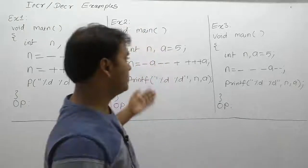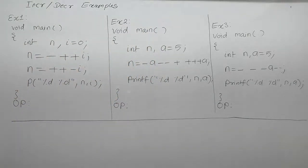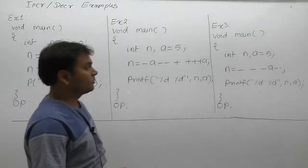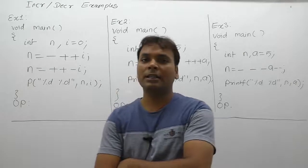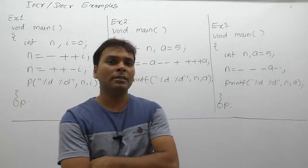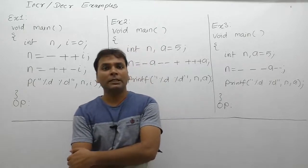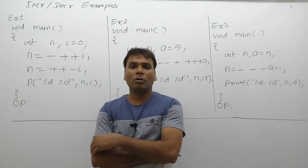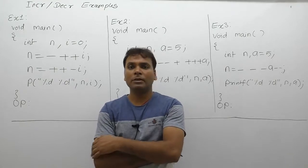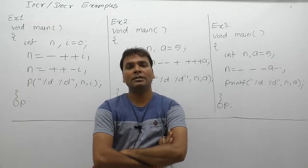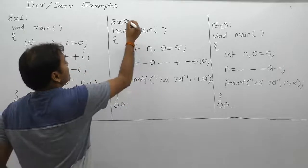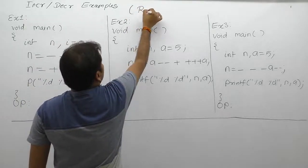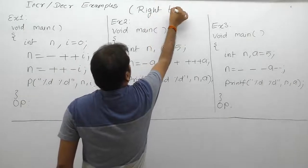Look at these examples. In the previous case we were solving only increment or decrement operations. But in this case, increment-decrement operations will be mixed with other unary operators. As discussed in the priority tables, all unary operators have exactly the same priority, and unary operators are solved based on the associativity rule from right to left.